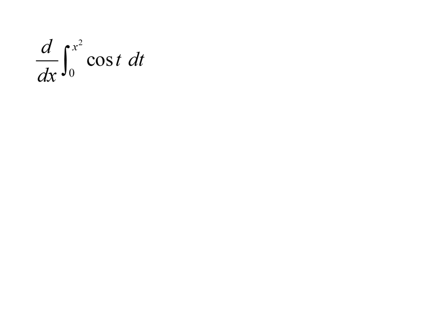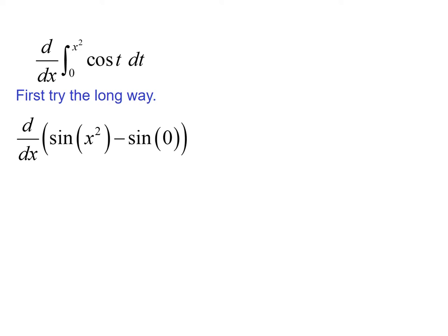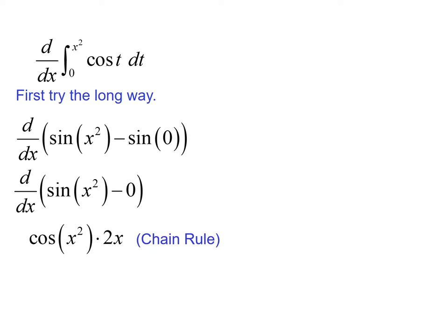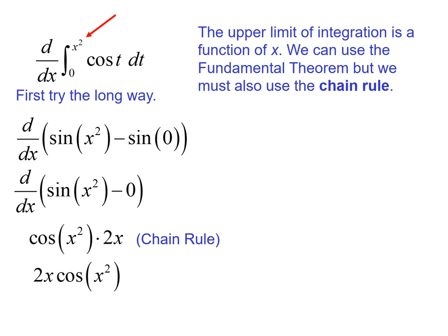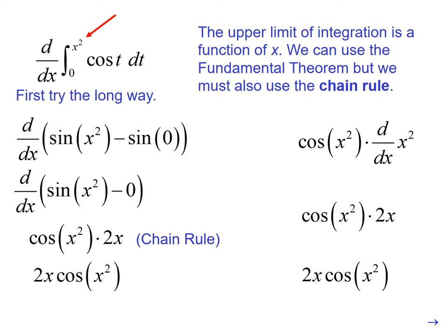Now we have something a little different. Going through the long way first: we take the antiderivative of cosine, get sine, evaluate at x squared and 0, then take the derivative — and we have to use chain rule. We get cosine of x squared times 2x, or 2x cosine of x squared. Applying the fundamental theorem, since the upper limit of integration is x squared rather than just x, we apply chain rule: plug in x squared for t giving cosine of x squared, then multiply by the derivative of x squared, giving 2x cosine of x squared.